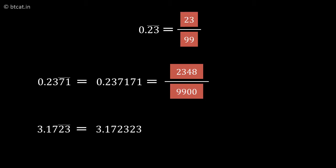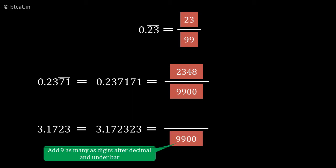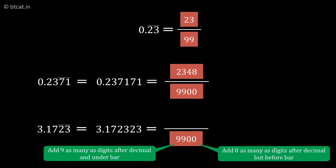First, start with the denominator. There are 2 digits with the bar, so we have two 9s. There are 2 places after the decimal and before the bar, so we add two zeros. The denominator is 9900.